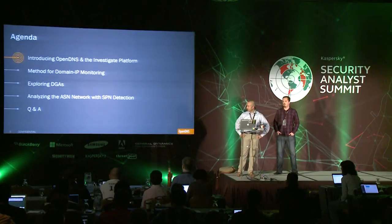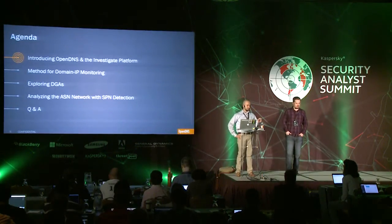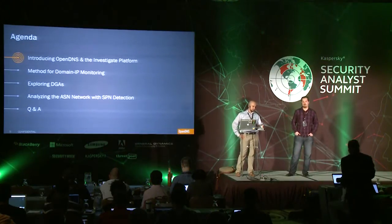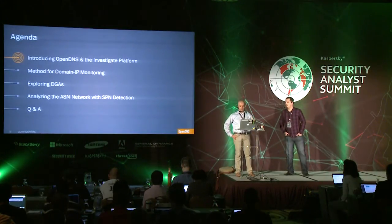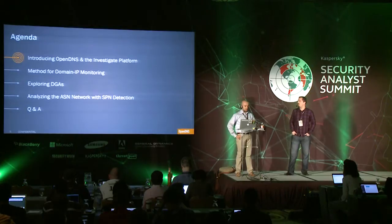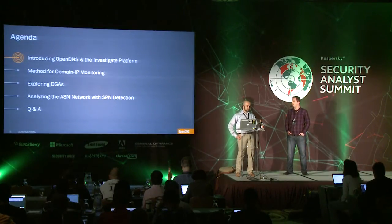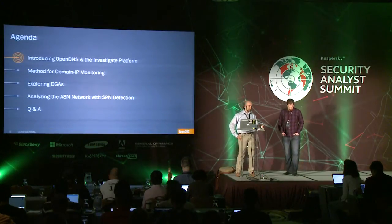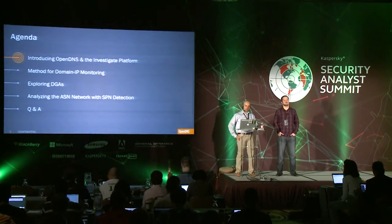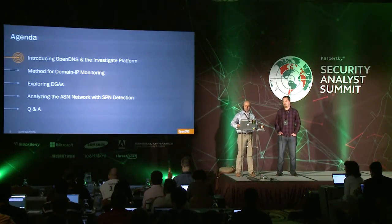What's on the agenda today? We're going to start with an overview of OpenDNS's global network, then dive into a few models we use — mainly domain-IP monitoring and exploring DGAs using graphs and visualization — and finally an interesting approach in analyzing maliciousness on the ASN network.